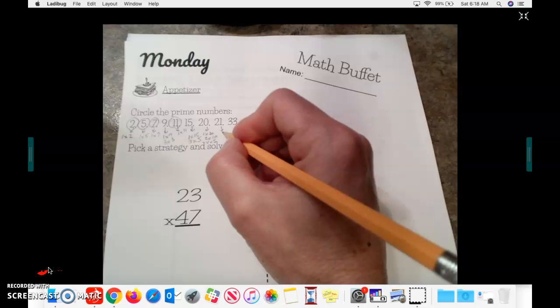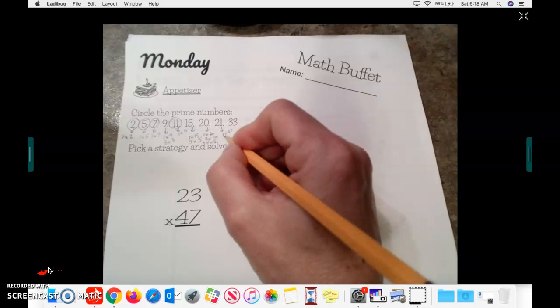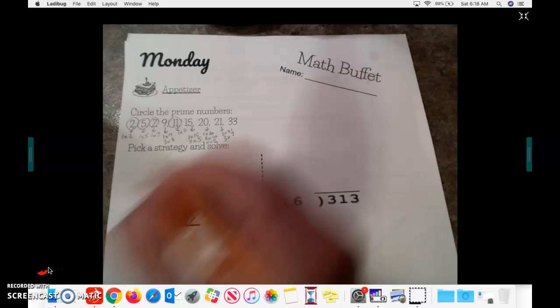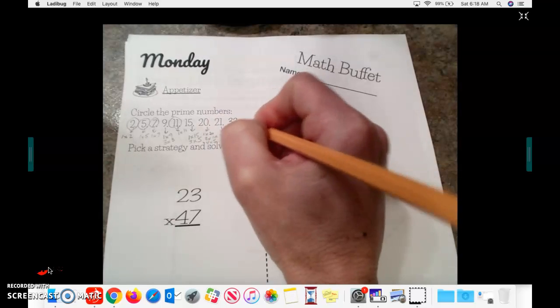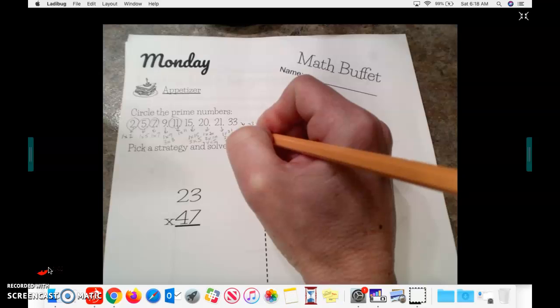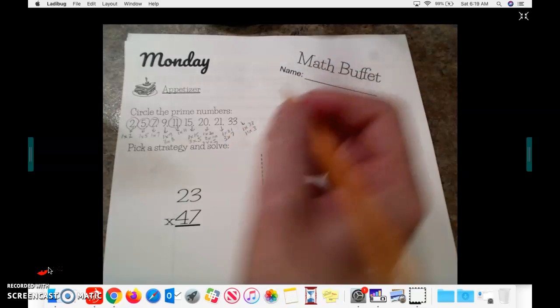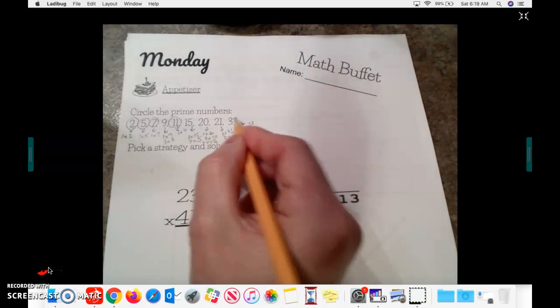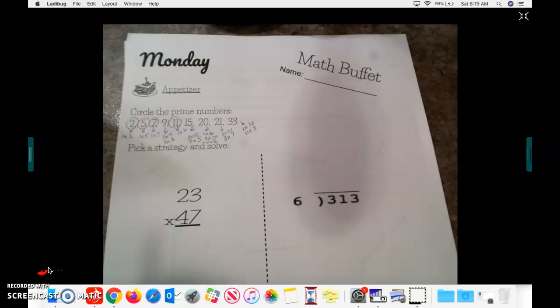21. 1 times 21, 3 times 7. Not a prime number. 33. 1 times 33, 11 times 3. So this is not a prime number. So in this case, 2, 5, 7, and 11 are your prime numbers.